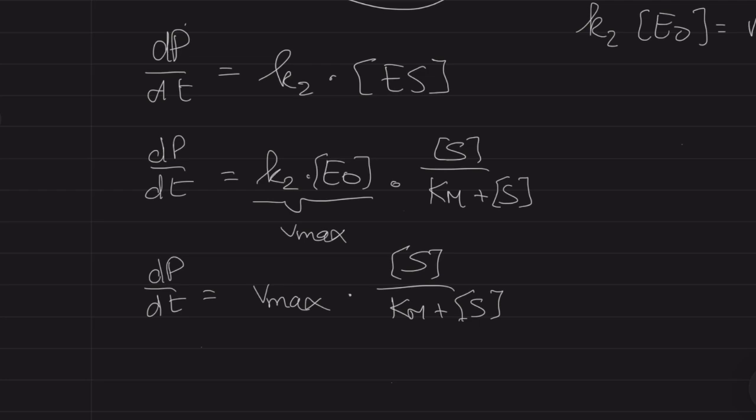Now I'm going to substitute in the formula for ES which is E0 times S divided over Km plus S. And then we'll see because we have K2 times E0 in there which is equal to Vmax, we end up with the equation dP/dt is Vmax times the substrate concentration divided over Km plus your substrate.